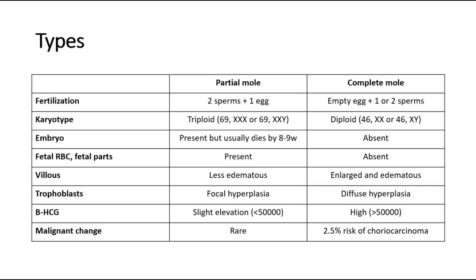For the karyotyping, partial mole will be triploid, whereas complete mole will be diploid. The triploid in partial mole consists of two sets of chromosomes from paternal origin and one set from the maternal origin, whereas the diploid in the complete mole is only paternally derived. The maternal chromosomes are absent, hence it will result in no viable fetus, as the placenta develops into an abnormal mass of cysts.